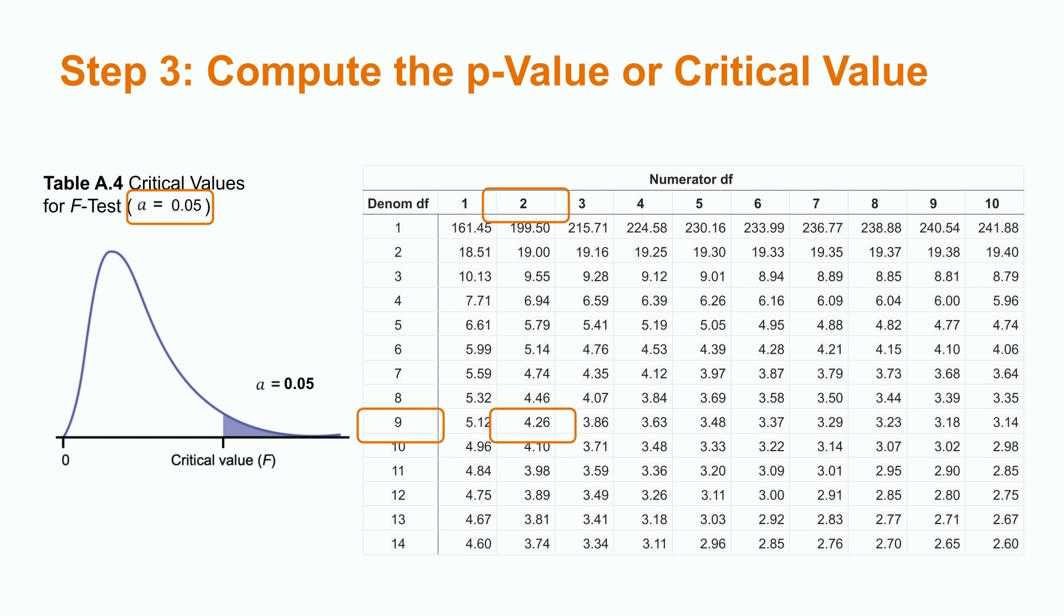The numerator degrees of freedom are k-1, where k is the number of groups. Because we have three groups, this value would be 2. The denominator degrees of freedom are n-k, the total sample size minus the number of groups. Since we have a total of 12 observations in three groups, this value would be 12-3, or 9.